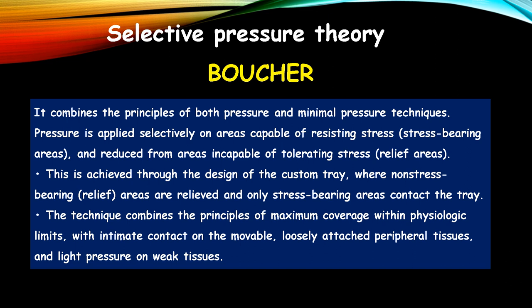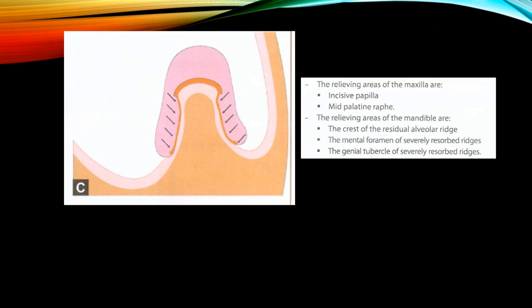The technique combines the principles of maximum coverage within physiologic limits, with intimate contact on the movable loosely attached peripheral tissues and light pressure on the weak tissues. The area of tissue contacted by the tray is recorded under pressure, and tissues not contacted by the tray are recorded in the state of rest. The relief areas of the maxilla are the incisive papilla and midpalatine raphae, and the relieving areas of the mandible are the crest of the residual alveolar ridge, mental foramen of severely resorbed ridges, and genial tubercle of severely resorbed ridges.